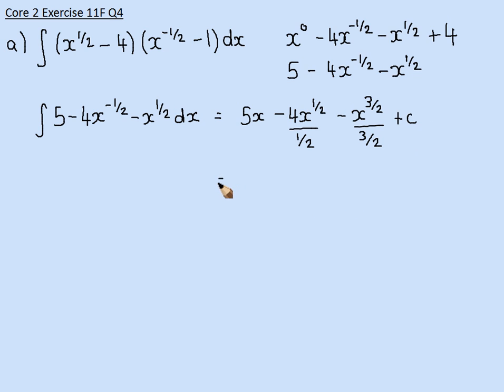Now, tidying this up, I've got 5x. 4 divided by 1 half is just 8. And then x divided by 3 over 2 is 2 over 3, x to the 3 over 2, plus our constant. So that's part A done.